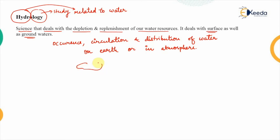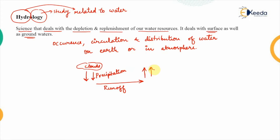From the clouds, precipitation happens — that is the first phase. This precipitated water runs off on the ground, which is known as runoff. When it is exposed to certain conditions it gets evaporated — that phase is known as evaporation. These are different components of the hydrological cycle. After evaporation, water vapor condenses into clouds, which move due to wind effects. This cycle works continuously and is never-ending, with no initial or final point.